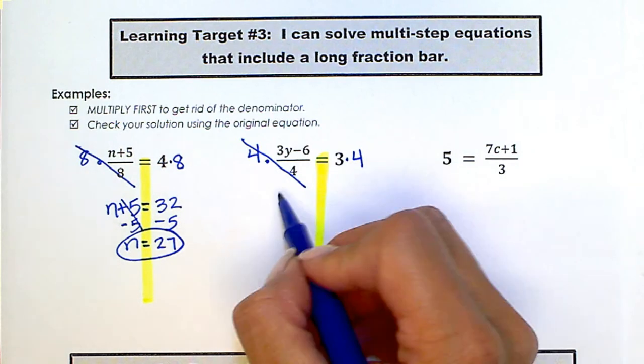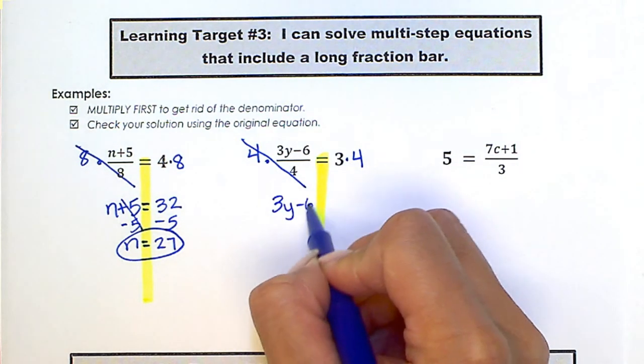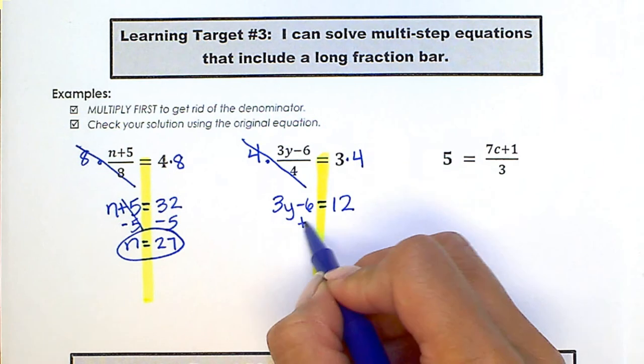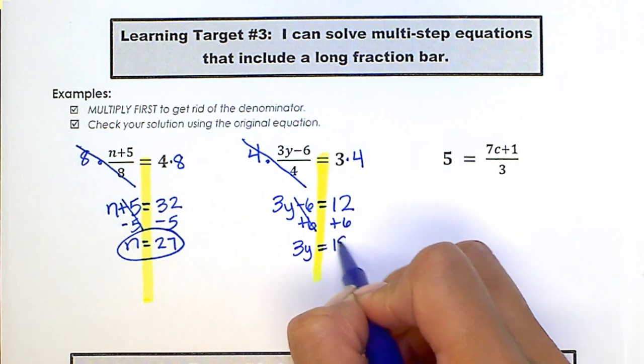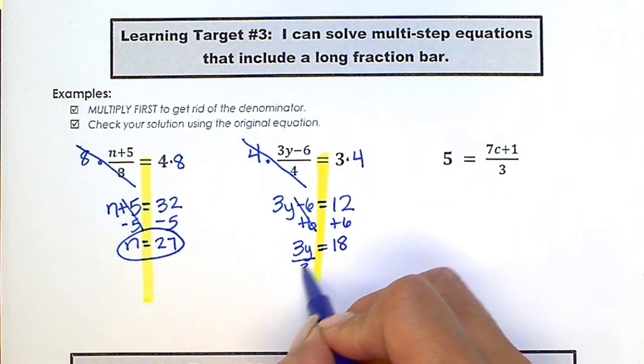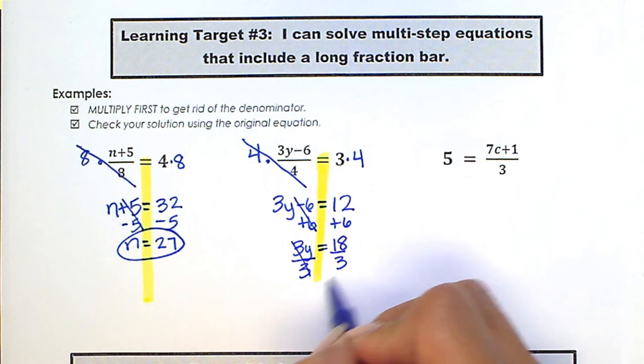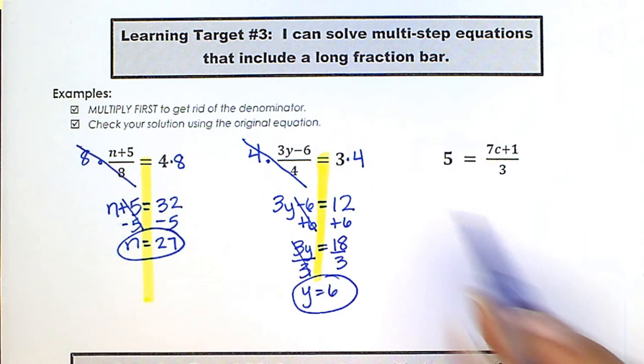And we have 3y minus 6 equals 12. Now we can finish solving this equation by adding 6 to both sides. We get 18, divide by 3, and y equals 6 for that one.